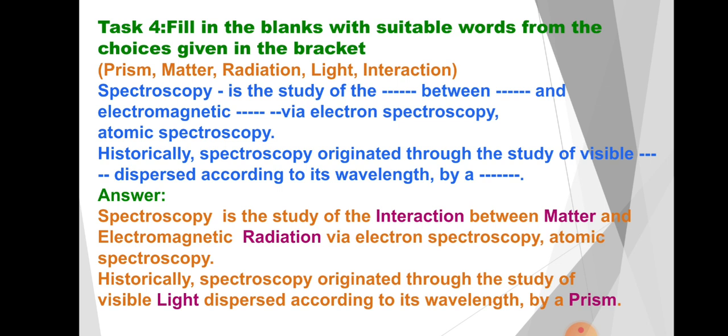Task 4: Fill in the blanks with suitable words from the choices given in the bracket (Prism, Matter, Radiation, Light, Interaction). Spectroscopy is the study of _____ between _____ and electromagnetic _____ via electron spectroscopy, atomic spectroscopy. Historically, spectroscopy originated through the study of visible _____ light dispersed according to its wavelength by a _____.